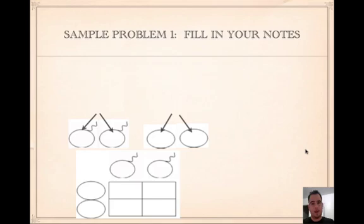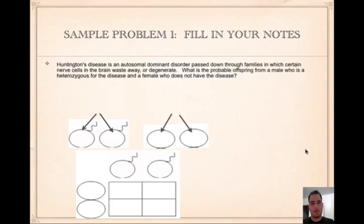Here's a sample problem. Huntington's disease is an autosomal dominant disorder passed down through families in which certain nerve cells in the brain waste away or degenerate. What is the probable offspring from a male who is heterozygous for the disease and a female who does not have the disease?